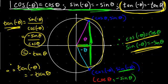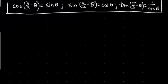We want to look at these identities and make sure they make sense. It's a lot easier to remember things when they make sense and it's not just pure memorization with no rationale. I think we've got time for one more identity: cosine of pi over two minus theta equals sine theta, and the other two. Let's prove these.